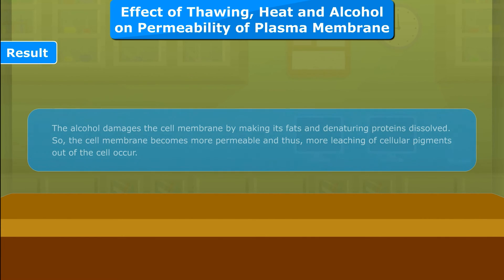Result: The alcohol damages the cell membrane by dissolving its fats and denaturing proteins. So, the cell membrane becomes more permeable, and thus more leaching of cellular pigments out of the cell occurs.